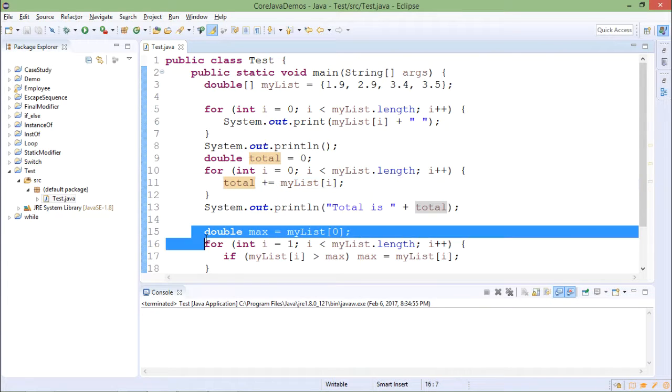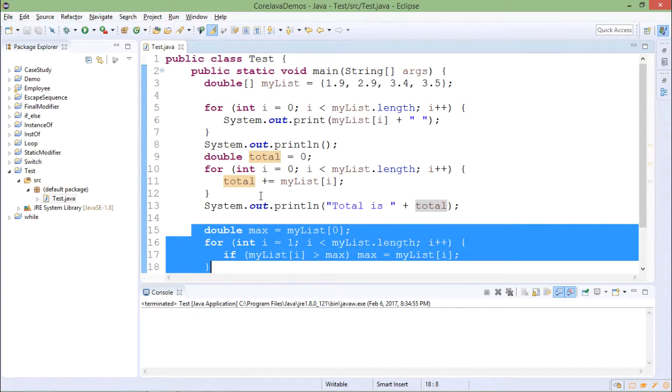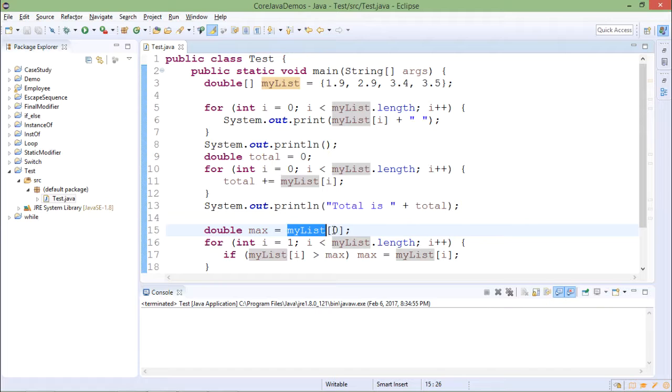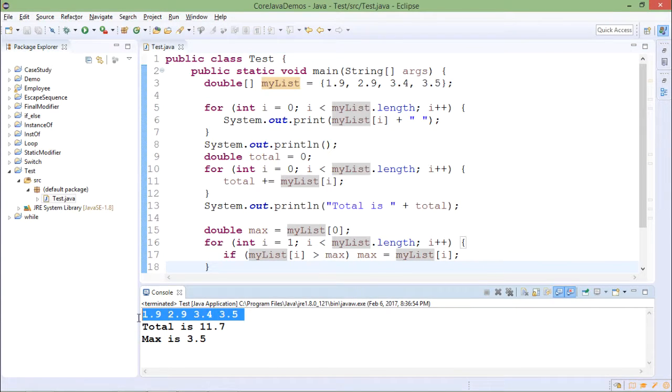The last part of code is printing the maximum element of the array. I am assuming that the zero element of the array is maximum. After that, I am comparing each element of the array with the max value, and if it is greater than the max value, then I am changing the max value with the new element. If I run it, in the first line, you will see the elements of the array, then the addition of elements of the array, and then the maximum element from the given array.